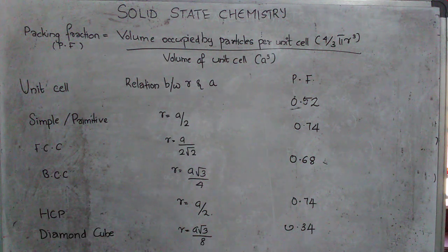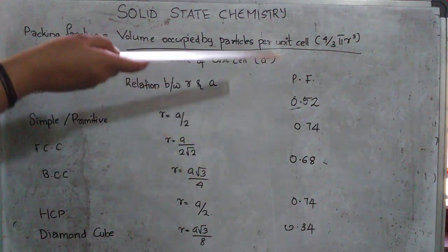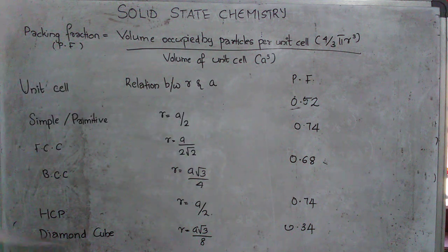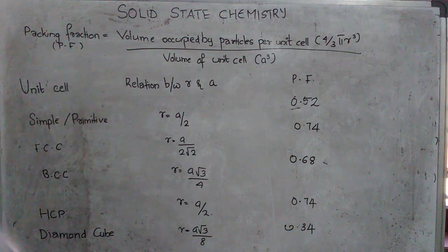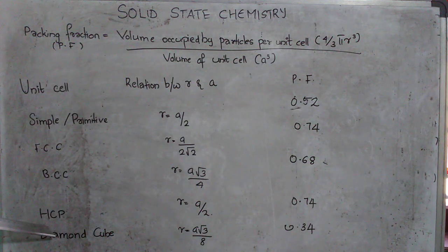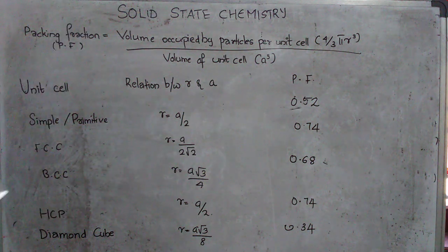Now packing efficiency will be this packing fraction into 100. So the least packing efficiency will be for diamond cube which is only 34 percentage. And the highest packing efficiency will be for face centered and hexagonal closed pack with 74 percentage.